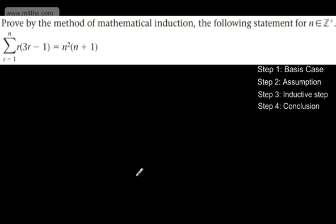So in the first question it says: prove by the method of mathematical induction the following statement for n, where n is a positive integer. We have the sum from r equals 1 to n of r multiplied by the quantity 3r minus 1, which is equal to n squared multiplied by the quantity n plus 1.